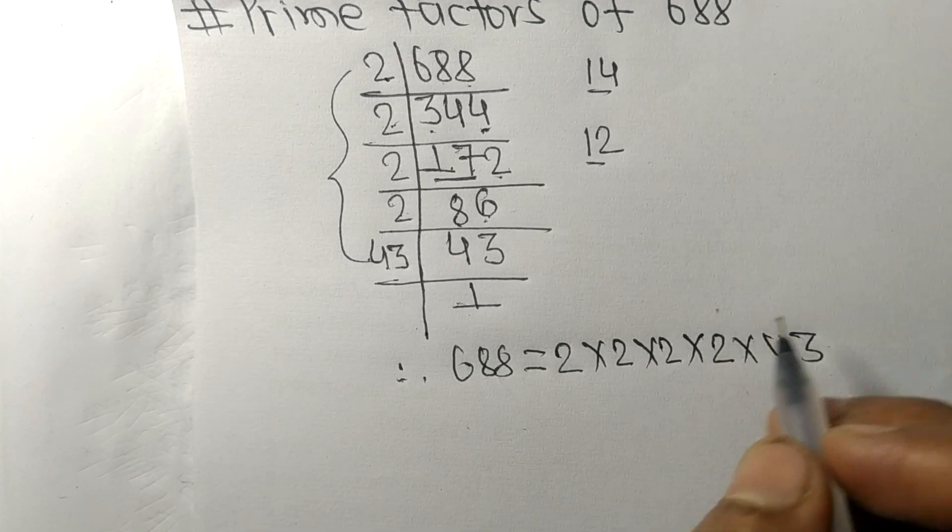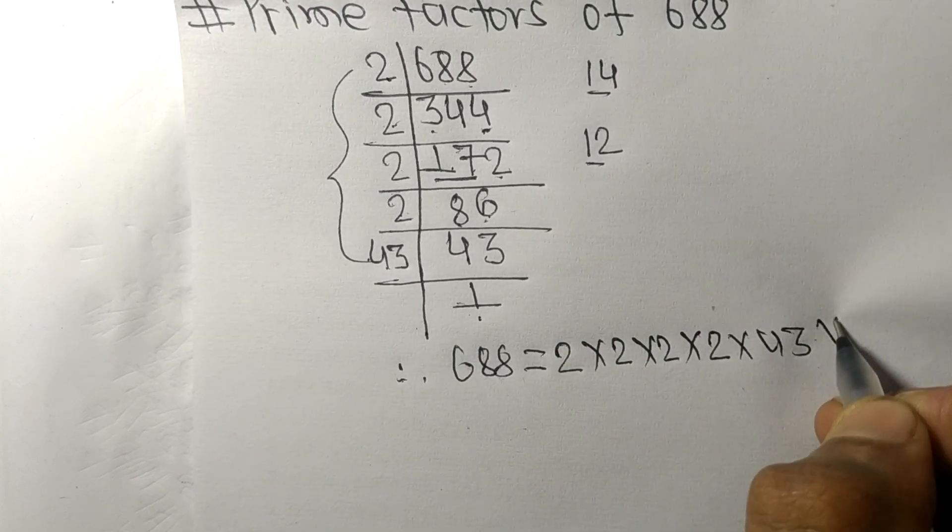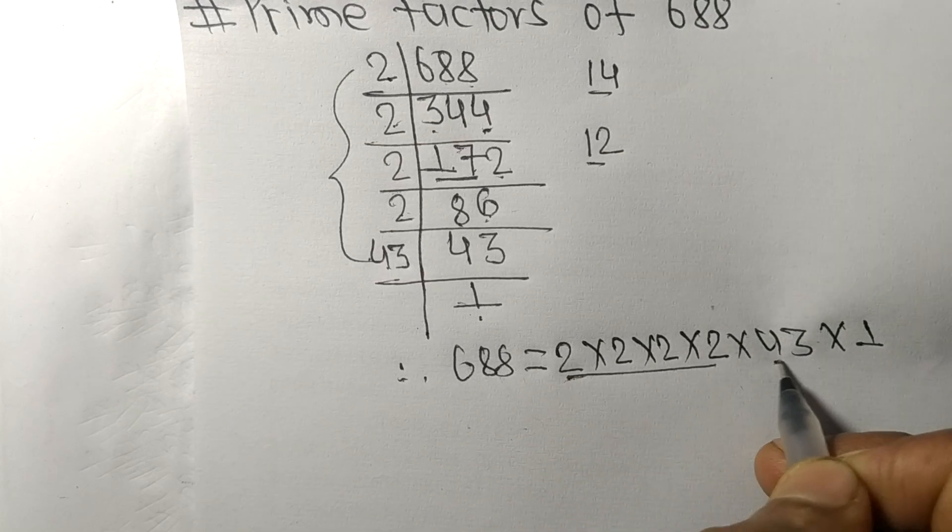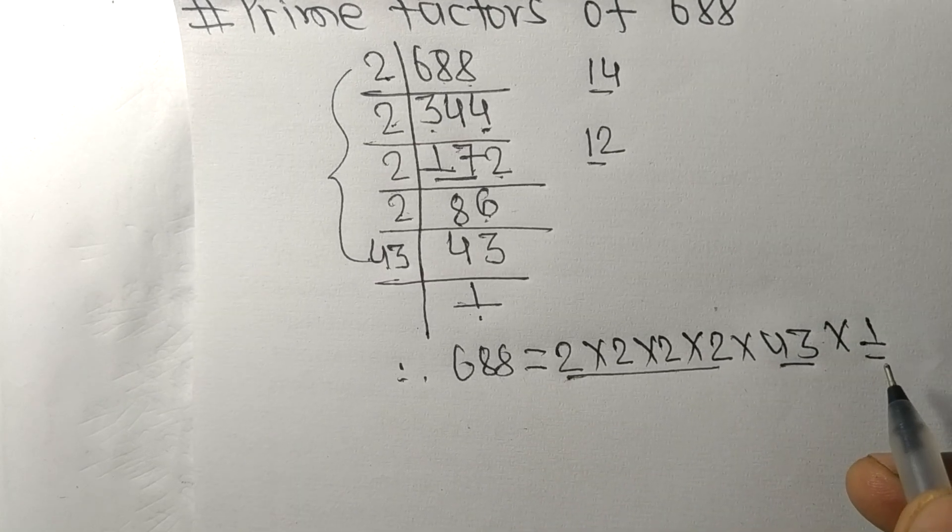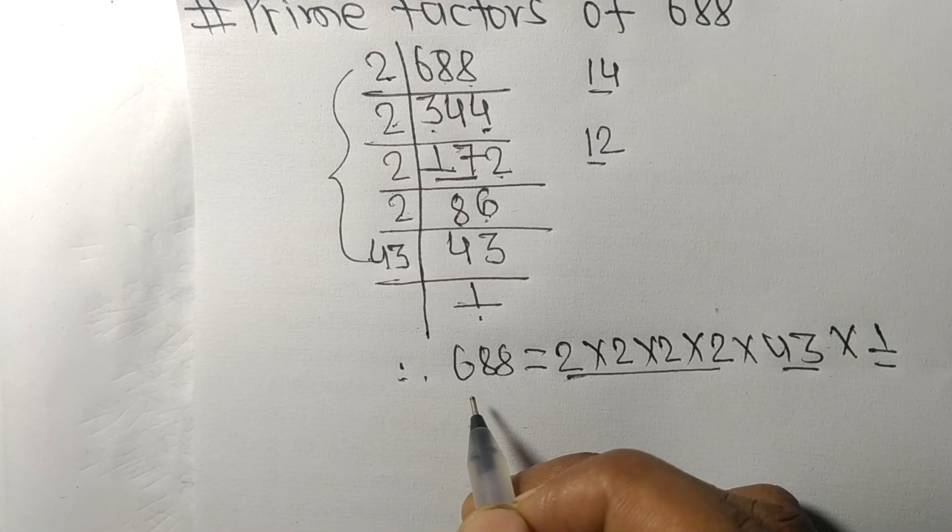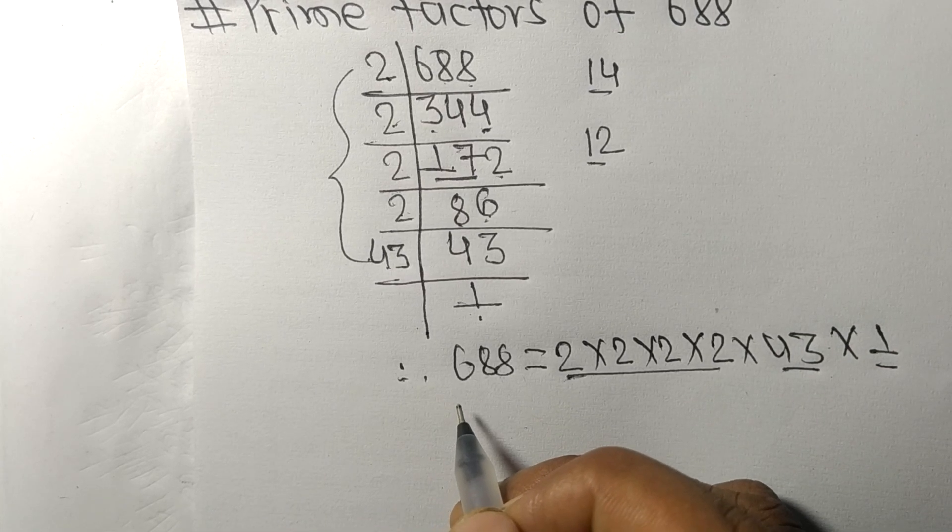From here we get 1. So 2, 43, and 1 are the prime factors of 688. So this much for today and thanks for watching.